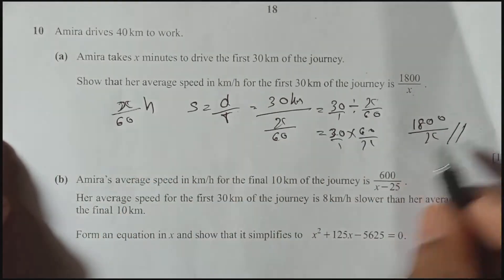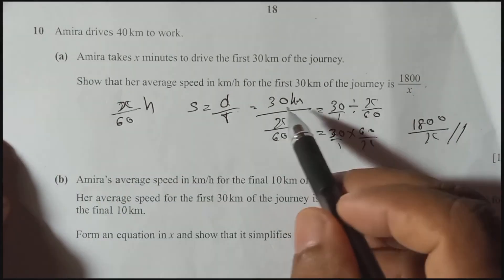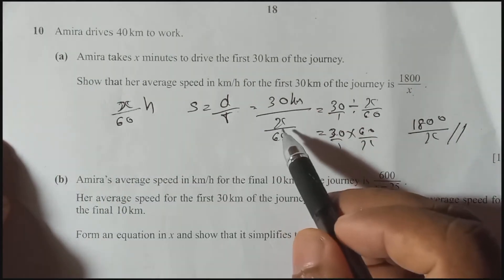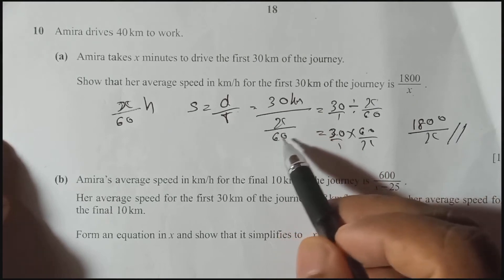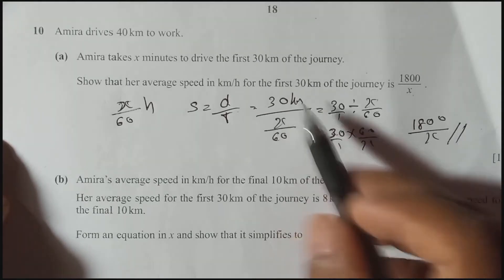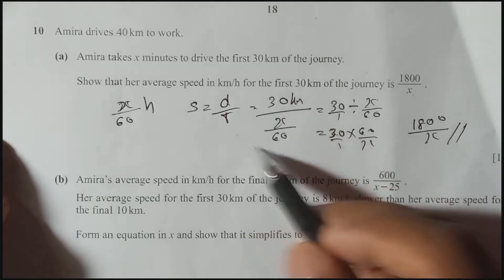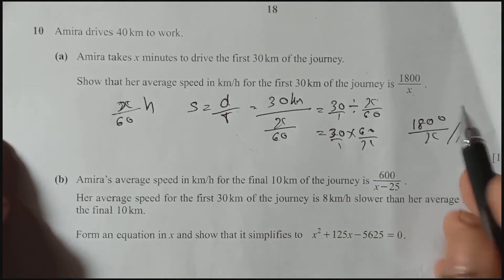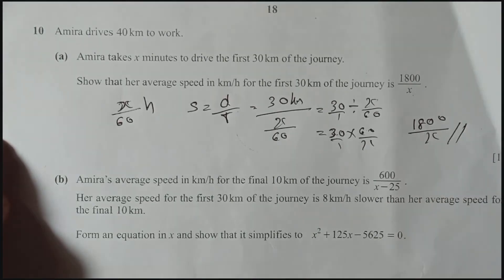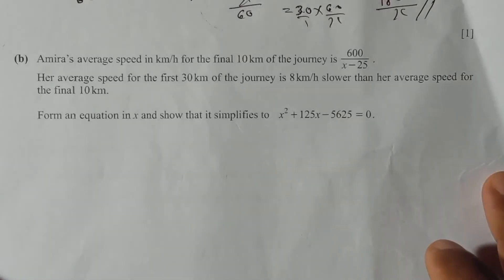You don't need to write all that working. If you write 30 upon X/60, that will be enough, and then you can write the answer 1800/X directly.